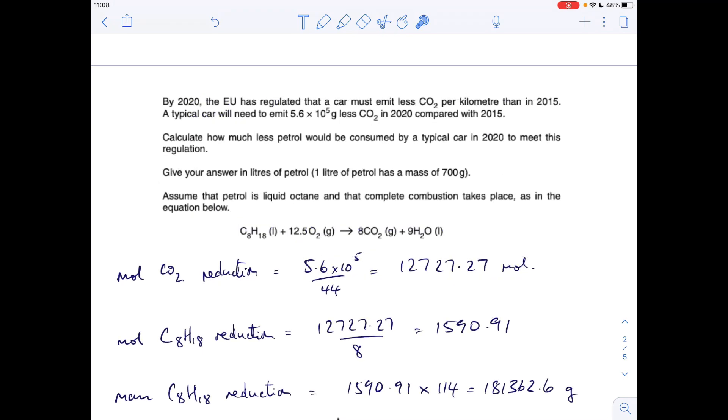Okay, so we've got a calculation now. So we've got to calculate how much less petrol will be consumed by a typical car in 2020 to meet this regulation where a car has to emit 5.6 times 10 to the 5 grams less carbon dioxide. So the first thing I've done is worked out the reduction of CO2 in moles, so it's got to emit that many grams less CO2, so divide that by the MR of CO2.